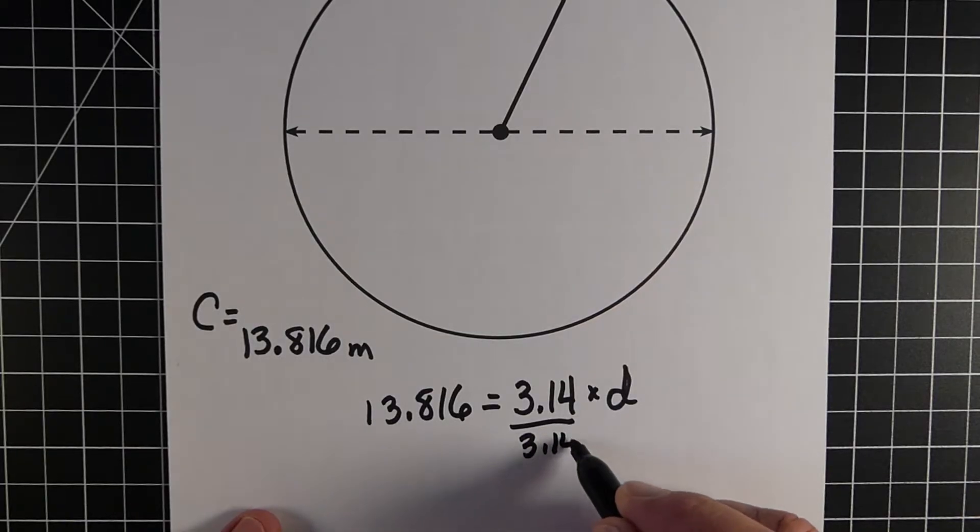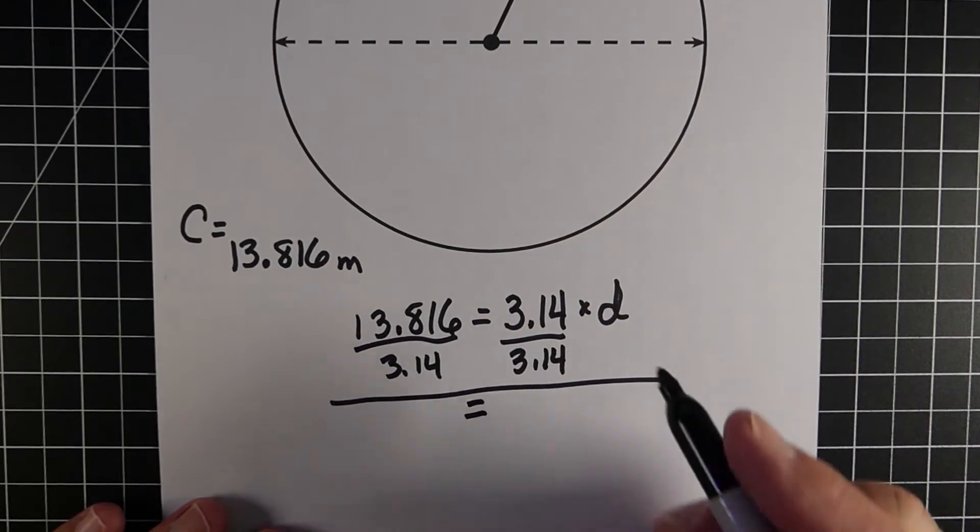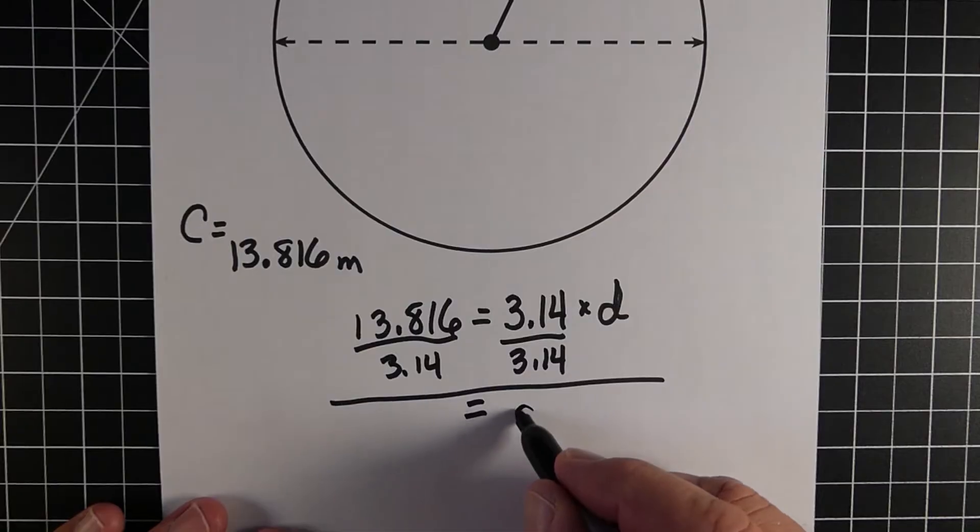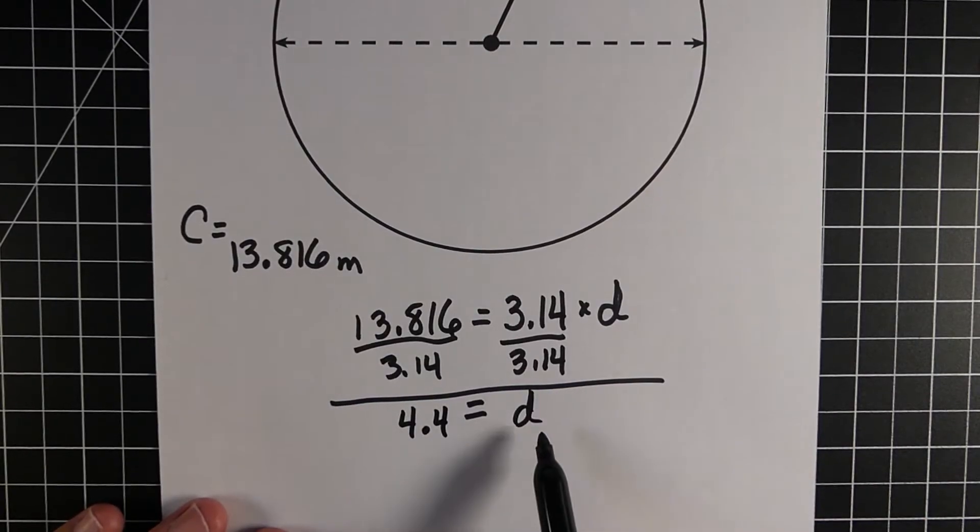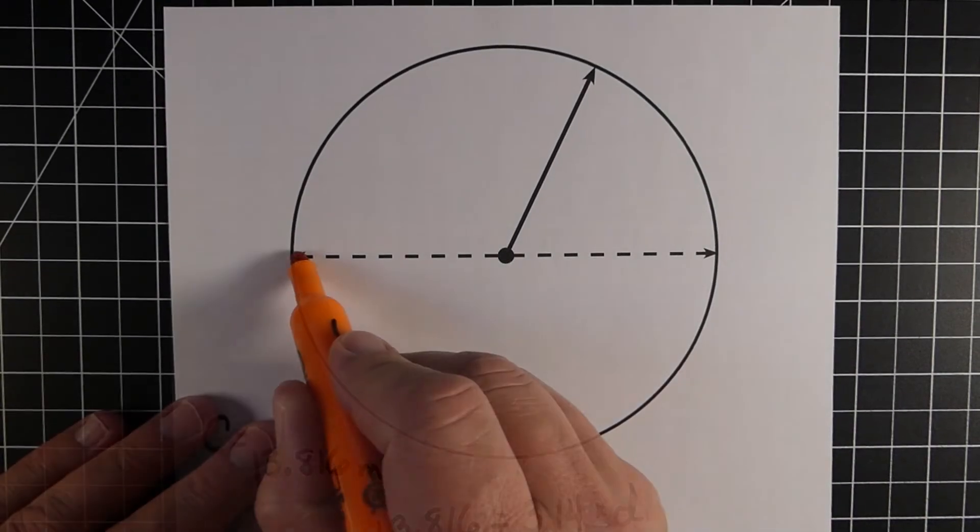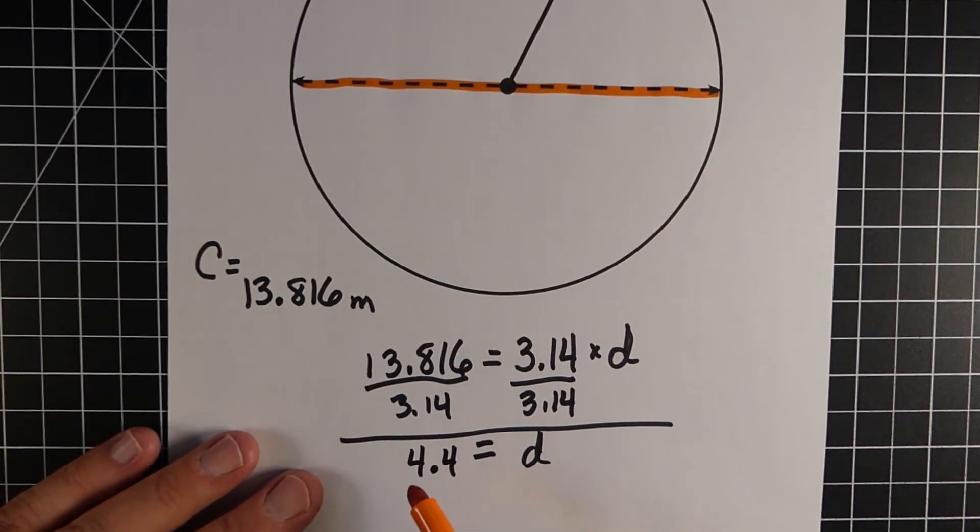So just like in the previous two examples, we divide both sides by 3.14. On the right side, we're going to be left with D, because the 3.14 will cancel each other out. And on the left side, we take 13.816 divided by pi, and you get 4.4. So our distance across the circle, the diameter, is 4.4 meters.